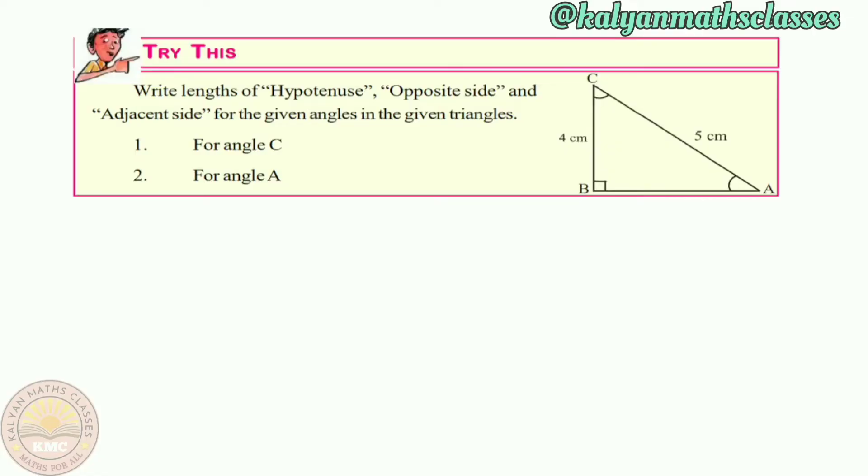Now, the question is: write the lengths of hypotenuse, opposite side and adjacent side for the given angles in the given triangle. First, we will find the length. After that, we have two questions here. We will find for angle C and for angle A. We will find the lengths to identify the hypotenuse, the opposite side, and the adjacent side. What is the length? We will calculate here.